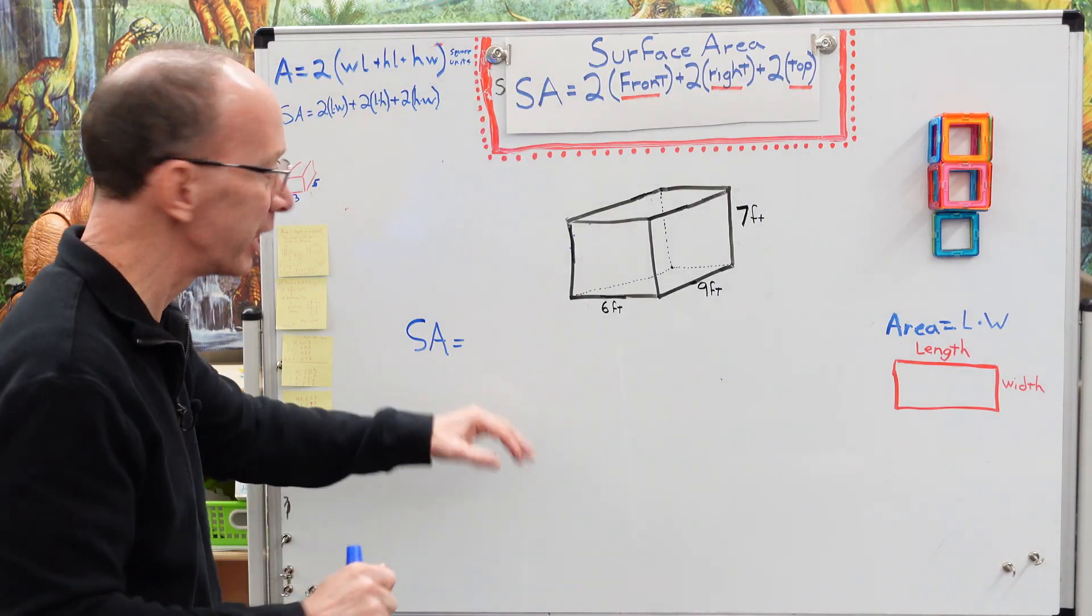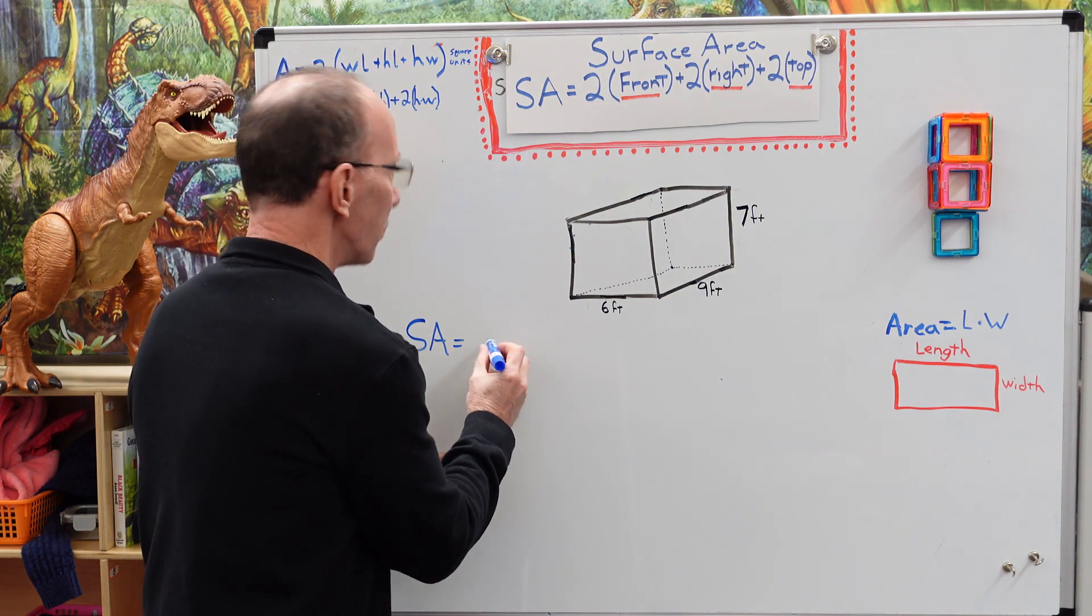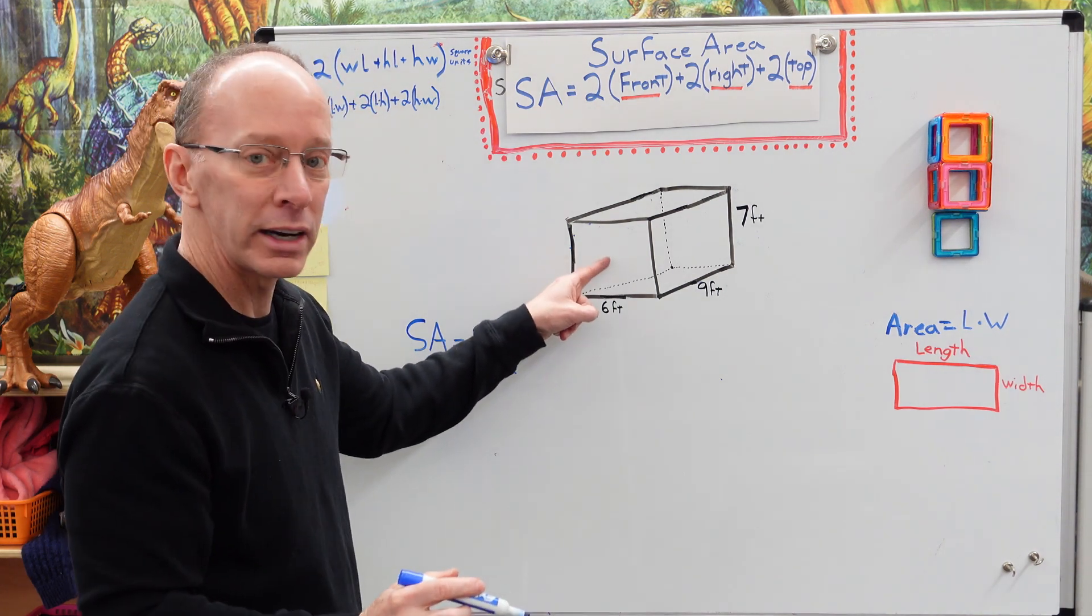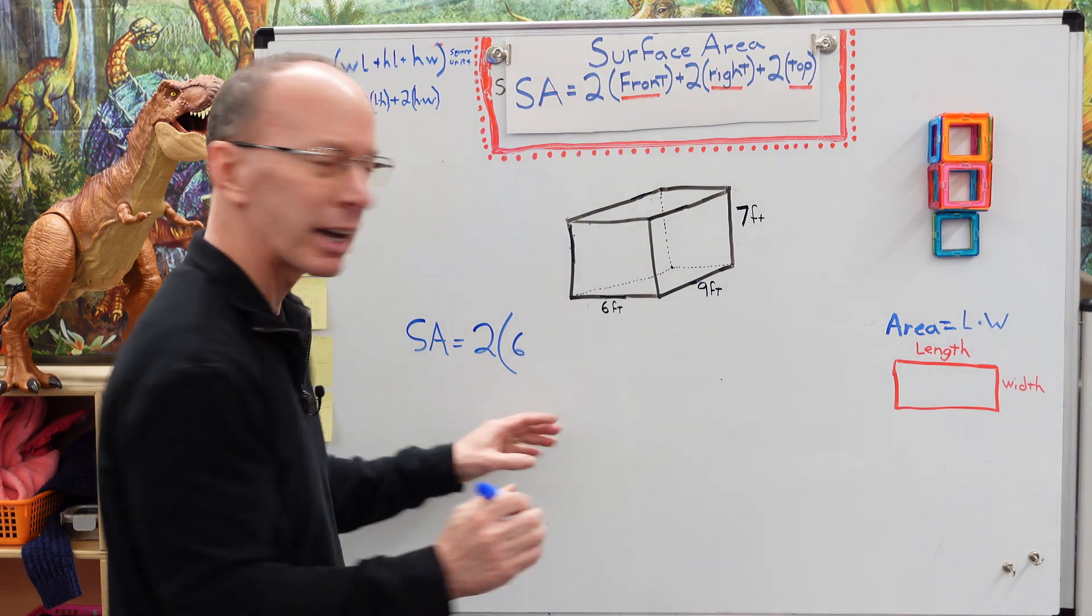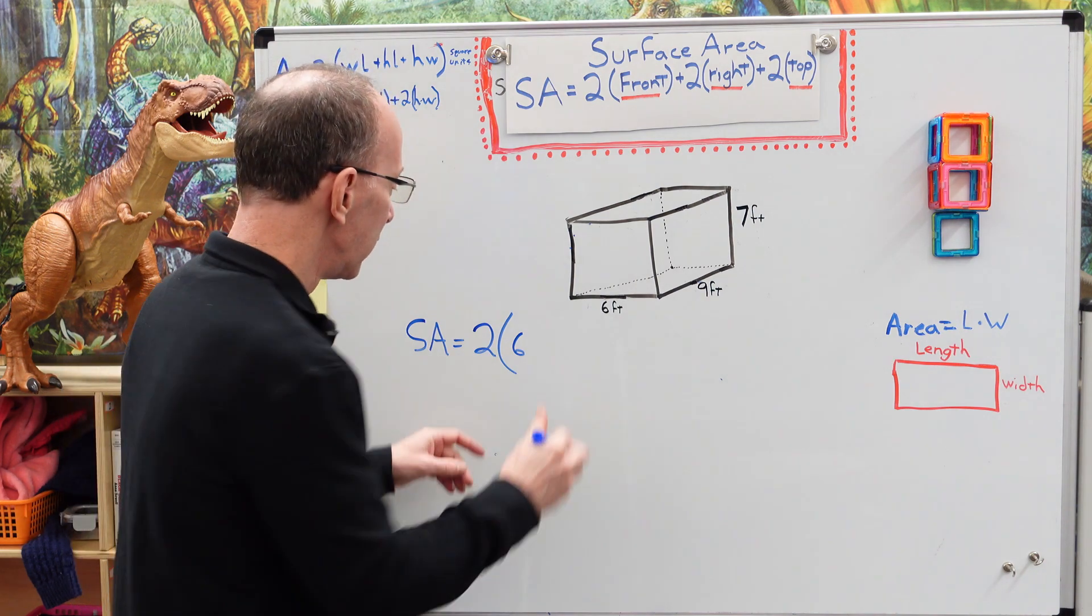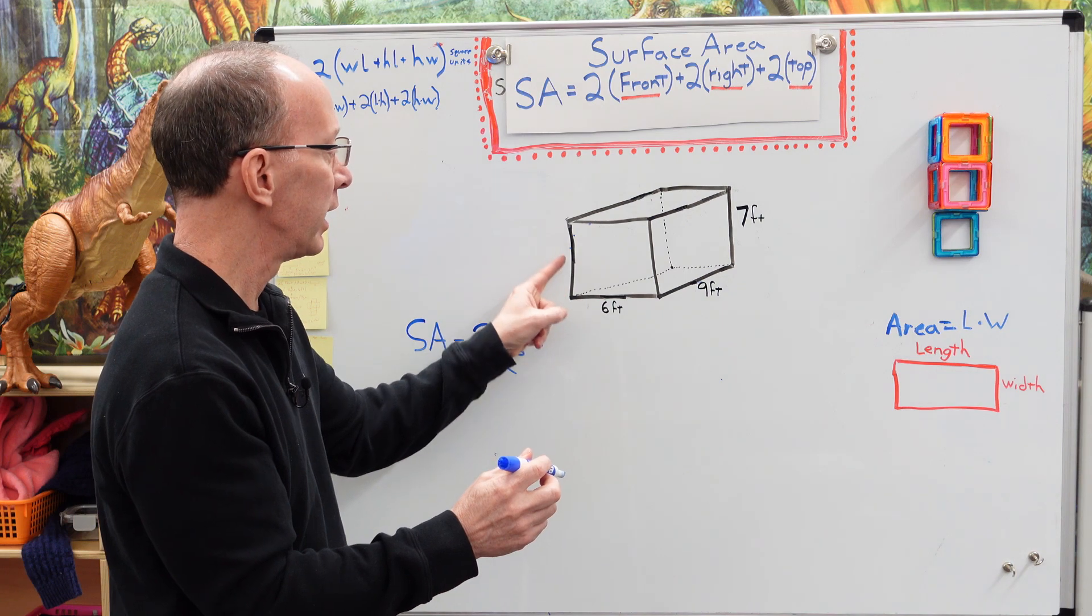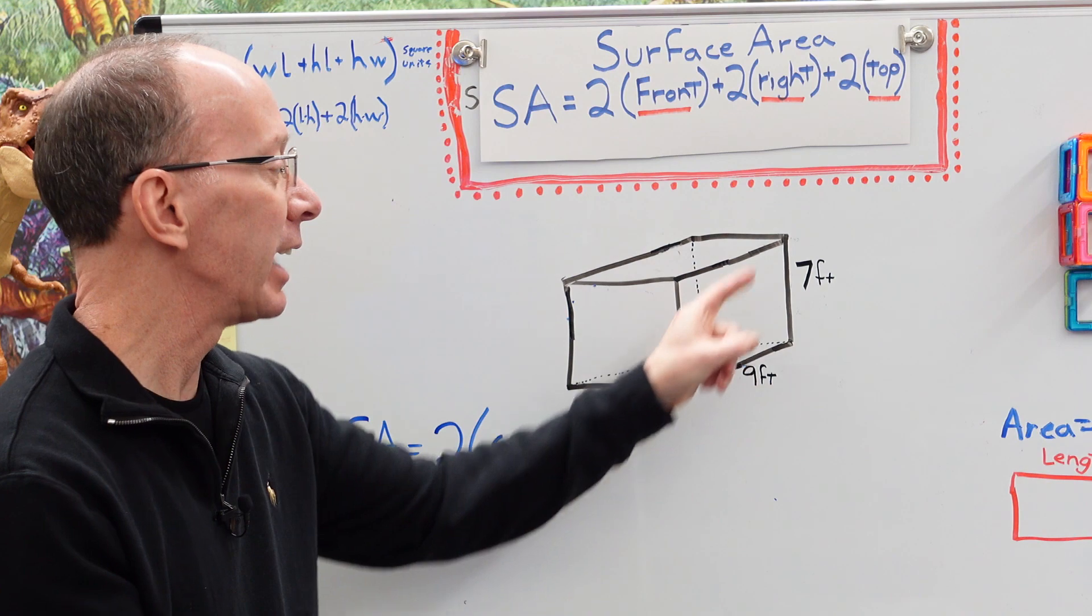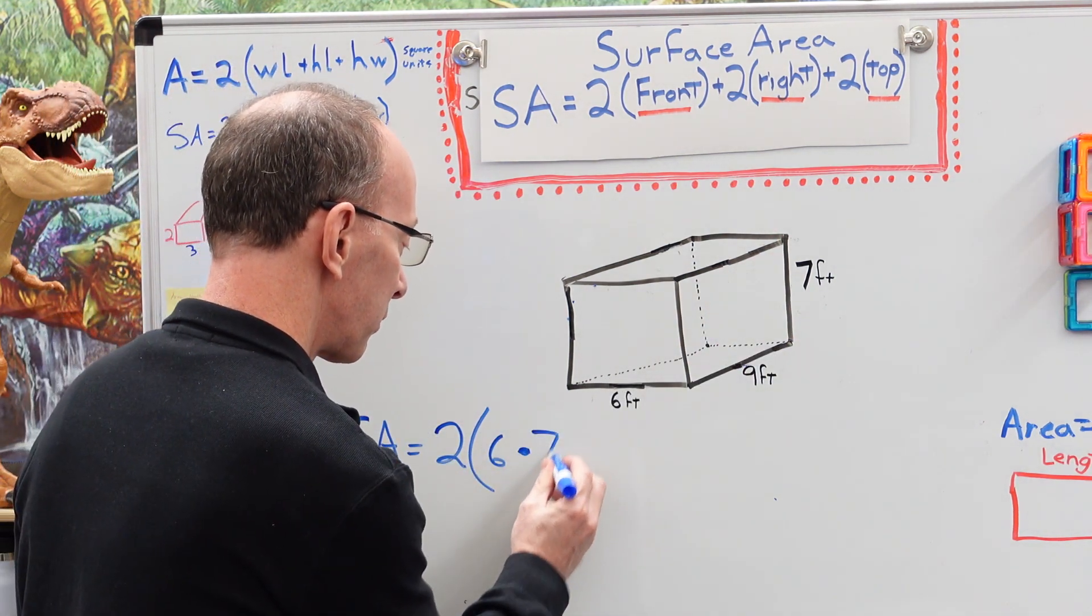All right, welcome back. Okay, let's go ahead and work this out. We'll check your answer. So we have surface area equals two times the front and the front is this one right here. So we would do length and that's six feet. I'm not going to put feet right there. I'm just going to leave it alone and then later on I'll go ahead and put my units. So this would be six times this is the width and you'll see that this line segment is the same as this line segment and the same as this line segment right here. Seven feet. So it's six times seven.